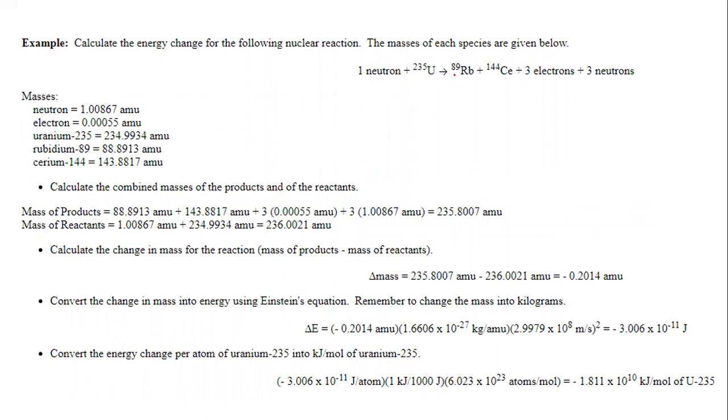Example problem: Neutron plus uranium-235 splits into rubidium and cesium with three neutrons. That is the atomic mass calculation. The negative sign indicates that the energy is released from the reaction.